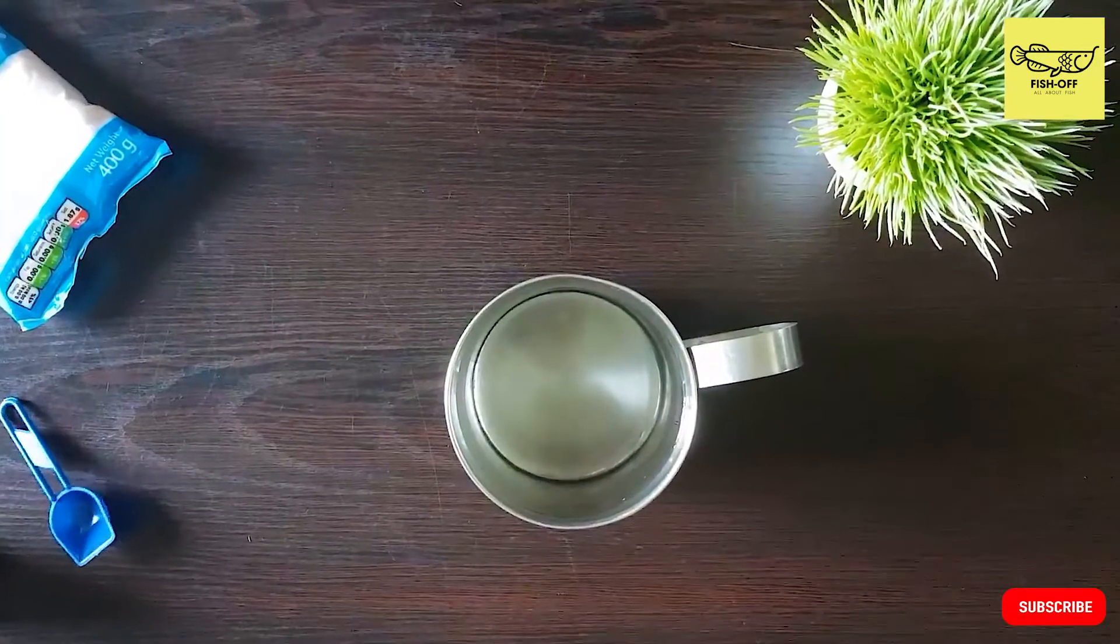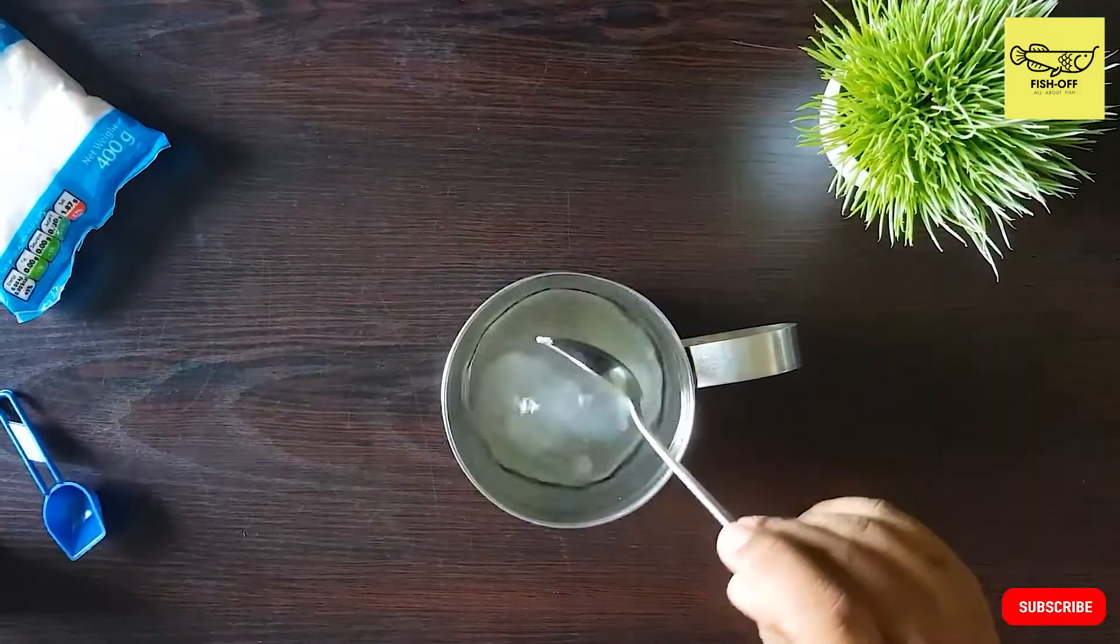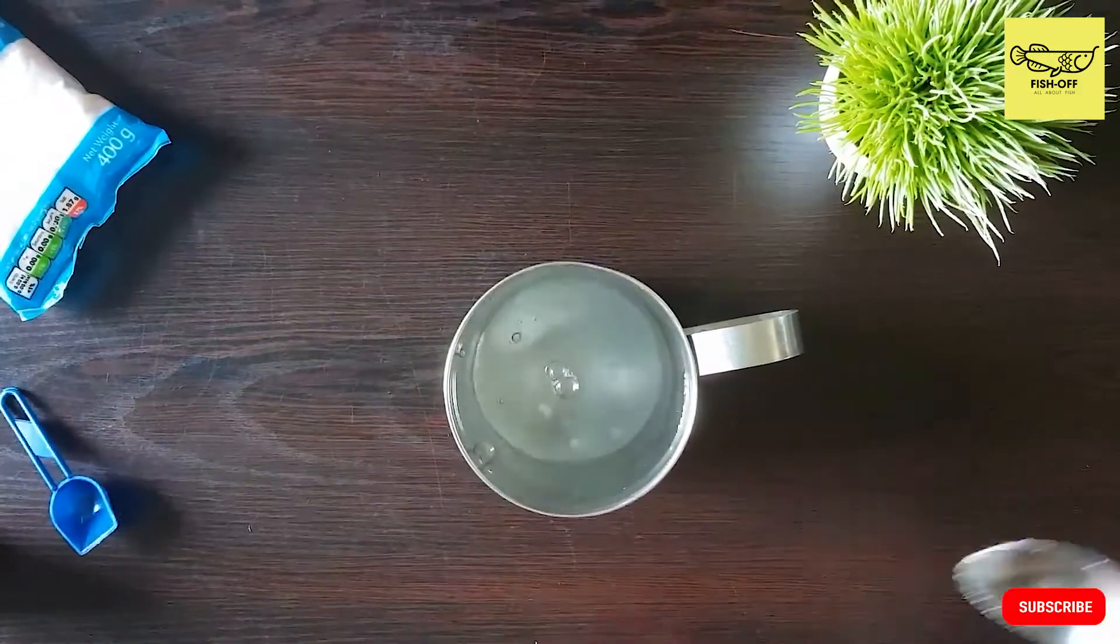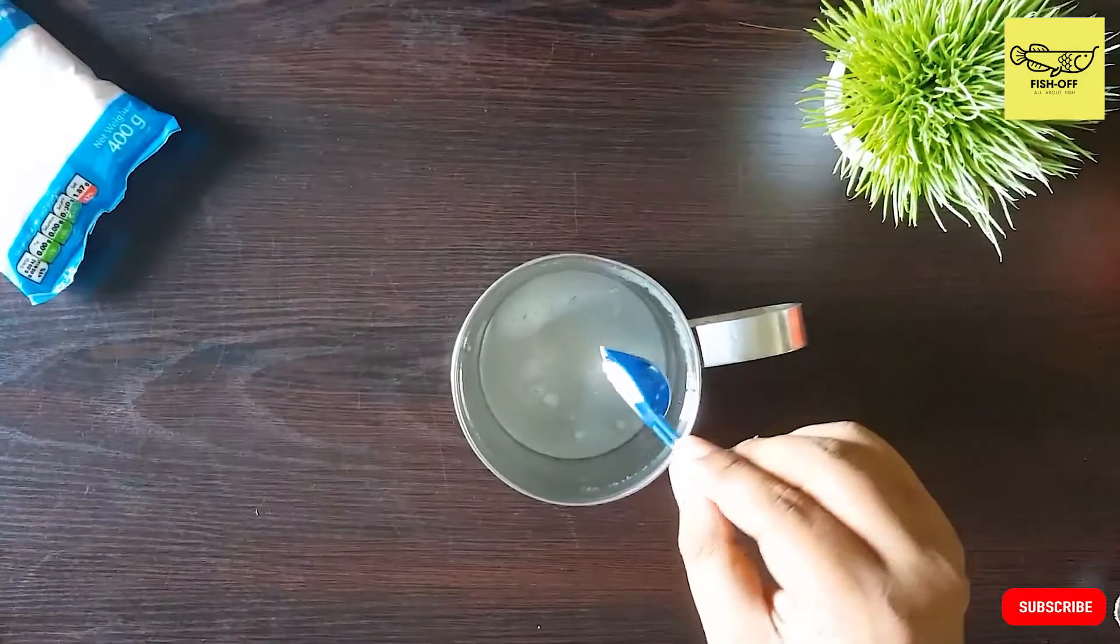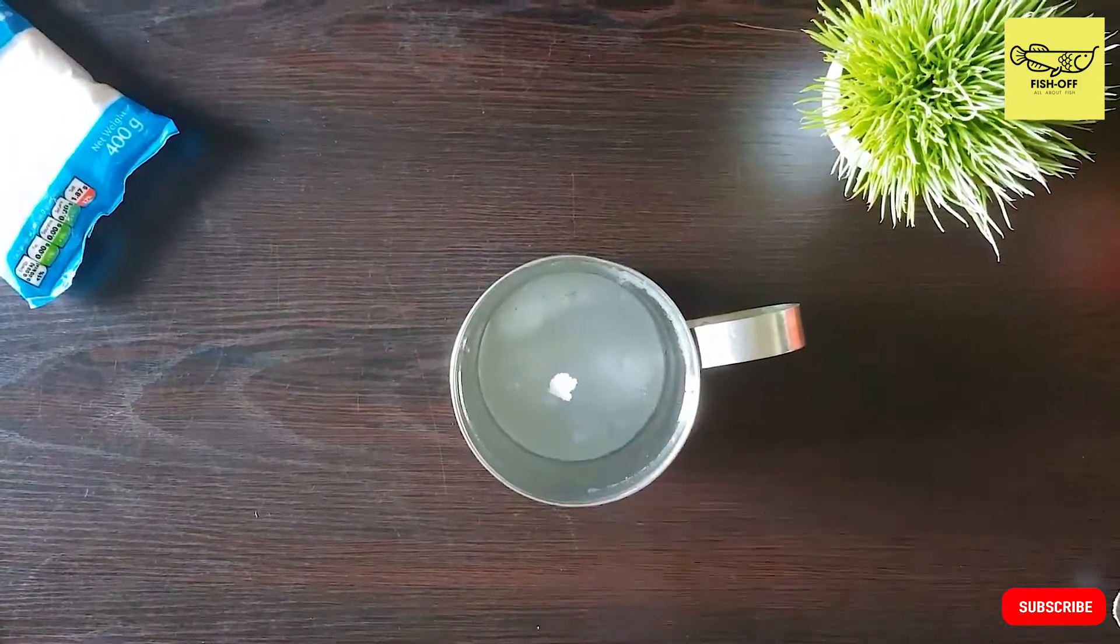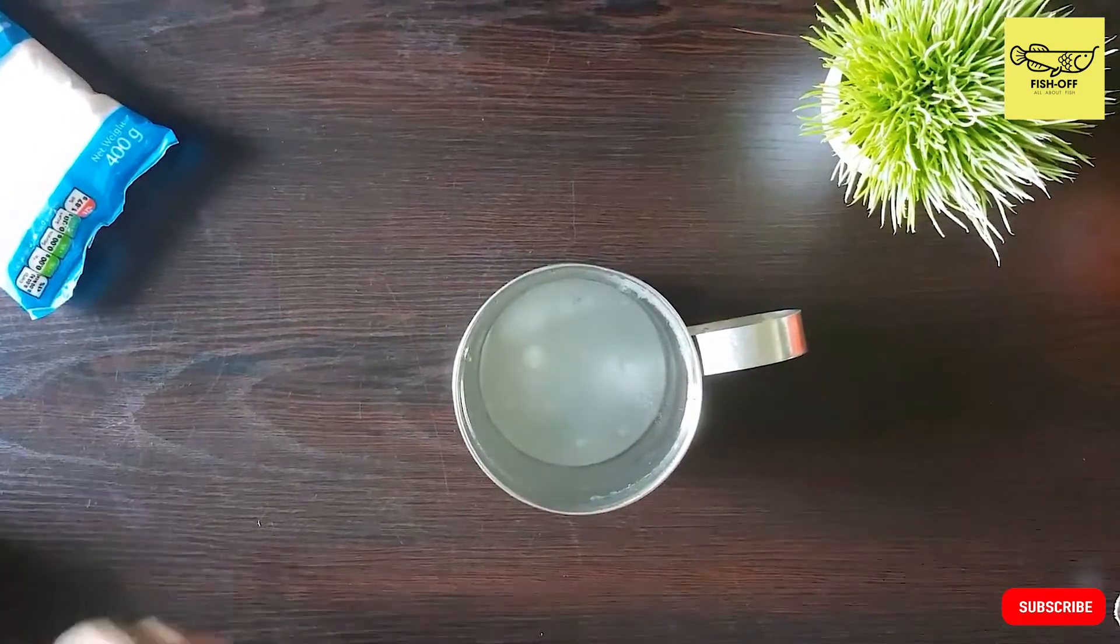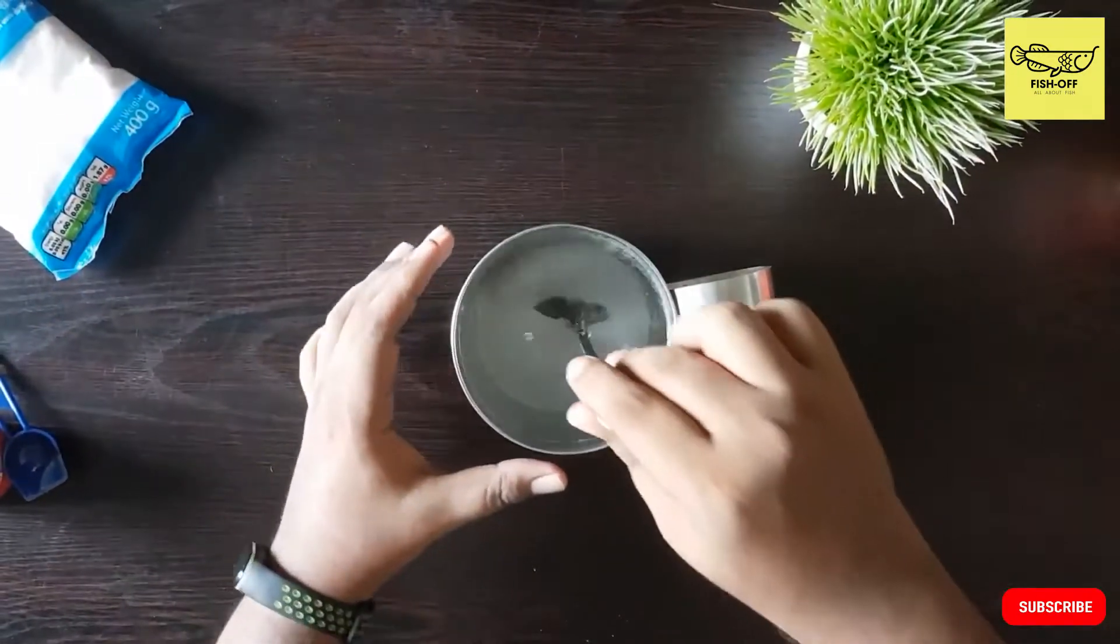Pour a liter of water into a jug and add one tablespoon of salt. Add a pinch or two of baking soda and stir the mixture well.